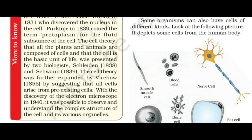The cell theory was further extended in 1855 by the suggestion that all cells arise from pre-existing cells. This means all cells already have pre-existing cells from which they originate.